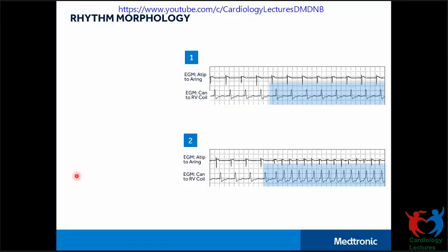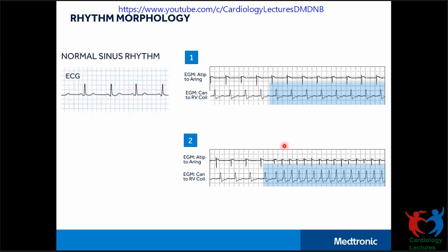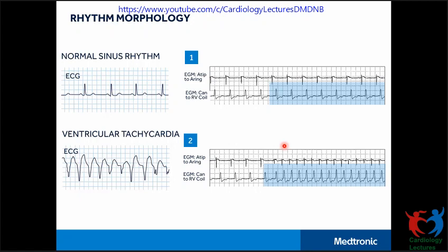Wavelet works on rhythm morphology. Comparing both morphologies, they appear different: the first rhythm is for normal sinus rhythm whereas the second is a VT. The morphology of SVTs is often similar to those of normally conducted rhythms, whereas the morphology of ventricular tachycardia is completely different from normally conducted rhythms.